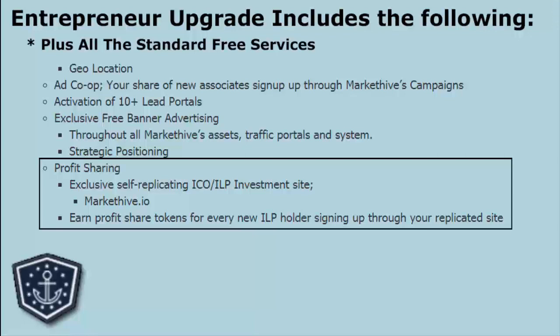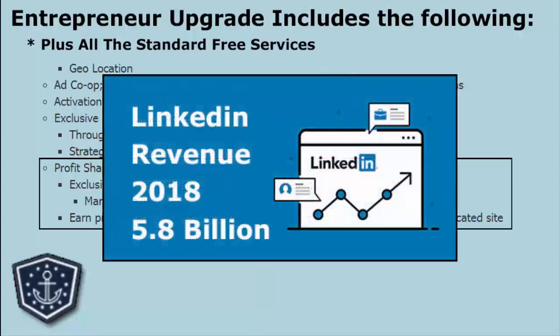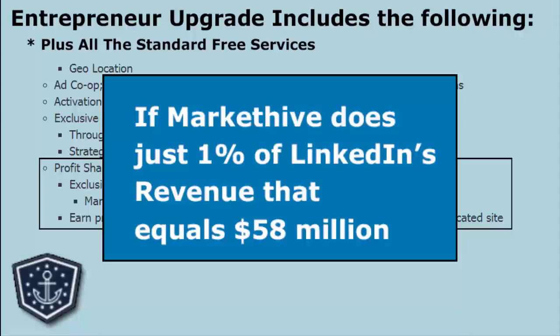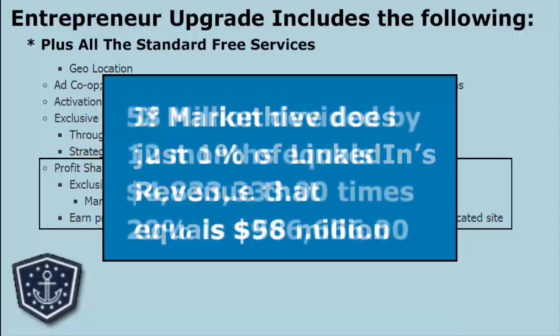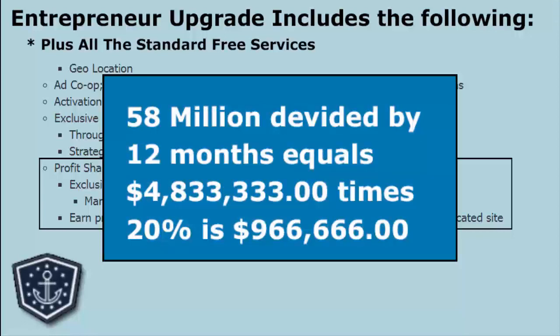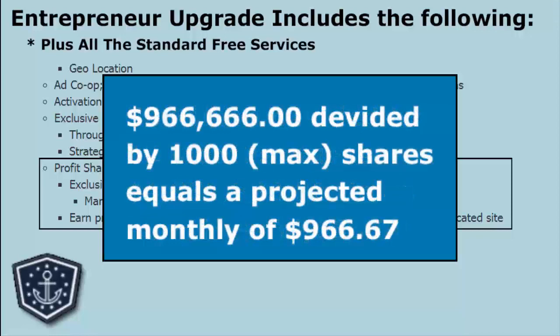After the principal is paid, we continue paying you what we call interest for 20 years. Your one-tenth of an ILP is one-tenth of a share. We will have a maximum of one thousand shares of 20% of the revenue of the company. If we should just do 1% of what LinkedIn does — they do one billion a quarter — you take one billion times 1%, that's ten million. Divide that by three for per month, multiply times 20%, then divide by one thousand: you're looking at $600 to $700 a month being paid out on each ILP.